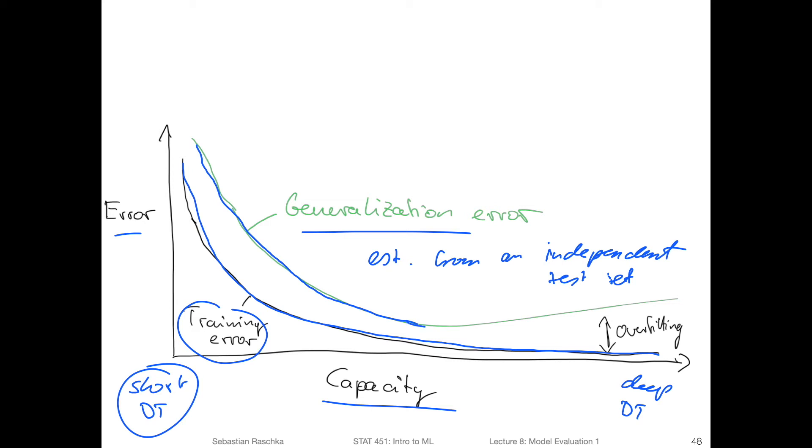If we make the model capacity larger, the model error will decrease also on new data. However, the larger the capacity becomes, the larger the error also will become after some inflection point.